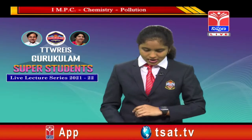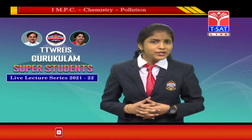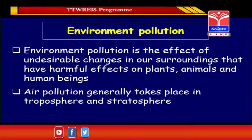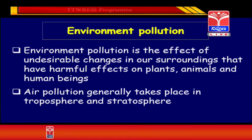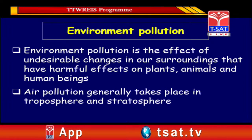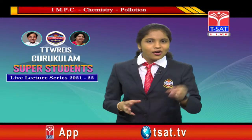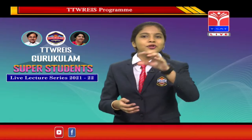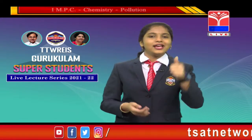So let us understand what environmental pollution means. Generally, pollution is the effect of undesirable changes that occur in the environment which have harmful effects on both human beings and plants. Based on the contaminants of the medium, environmental pollution is divided into three types: air pollution, water pollution, and soil pollution.